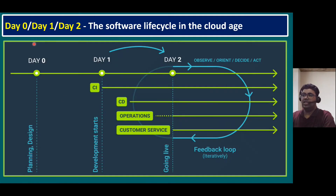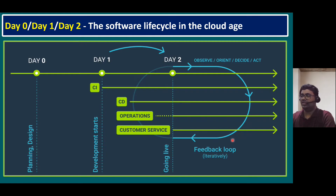Comparing the software lifecycle with day zero, day one, and day two in the cloud age: day zero is planning and design; day one is mainly continuous integration, where deployment and implementation begin; day two involves repetitive activities including continuous development, continuous delivery, and operations. The day-two team handles customer service in a continuous cycle — observe, orient, decide, and act — with feedback looped back to the development team. Both teams work together continuously until the product is successfully released to the end user.